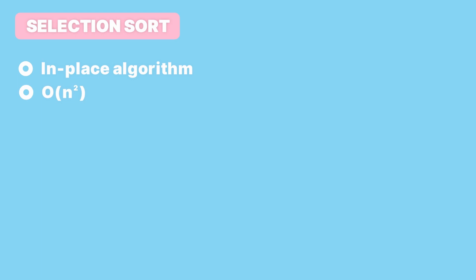Now let's look at how this algorithm performs. Selection sort is an in-place algorithm because the memory used doesn't depend on the number of items being sorted. The partitioning happens logically within the array itself, and there is no need for an extra array to perform the sorting. Although some variables are created to store values like last partition index, largest, and i, just like bubble sort it's considered in-place as long as the extra memory used doesn't depend on the number of items being sorted. It's a quadratic algorithm with a time complexity of O(n²). However, it doesn't require as much swapping as bubble sort because we only swap once per traversal, so on average selection sort tends to perform better than bubble sort. But it's an unstable algorithm because it may change the order of duplicate elements.